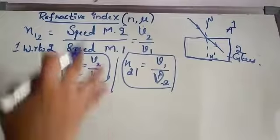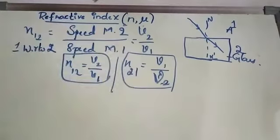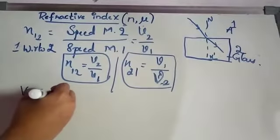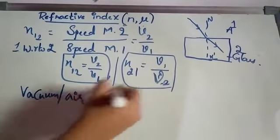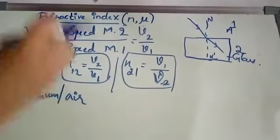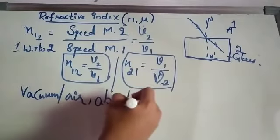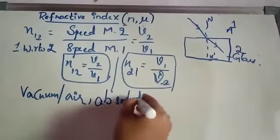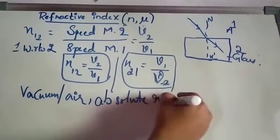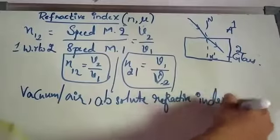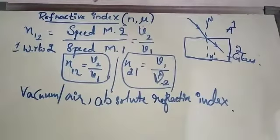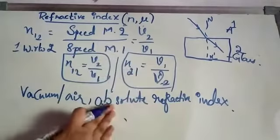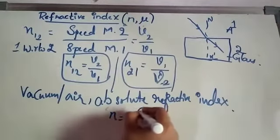In general, this is the concept: V1 by V2 or V2 by V1. If medium 1 is taken as vacuum or air, instead of writing all these terms, there is a general formula called absolute refractive index. Absolute refractive index is the same as refractive index. It is denoted by NM.